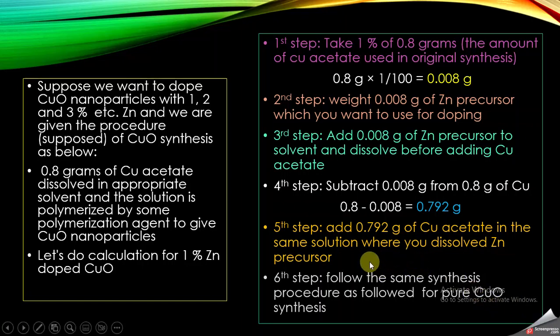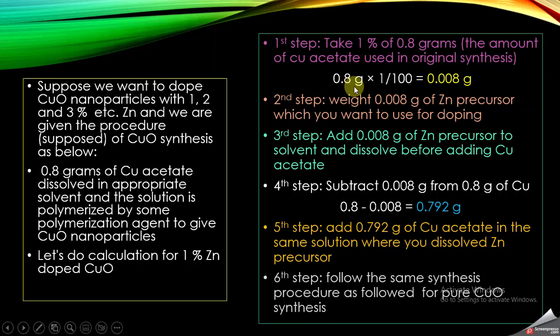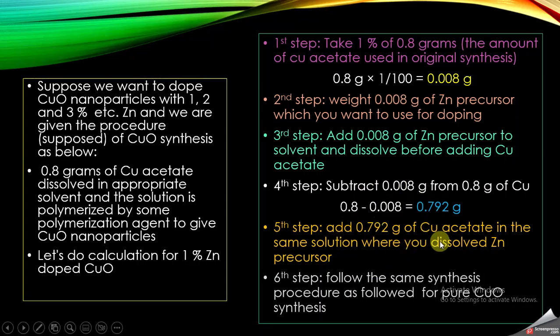If you want to dope with 2% or 3% zinc, you will do the same calculation — simply find out 2% or 3% of the original 0.8 grams used for the pure synthesis of copper, and do the rest of the steps similarly as mentioned. In this way, you will achieve the desired doping level in your pure material.